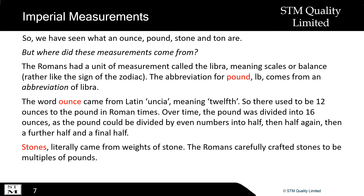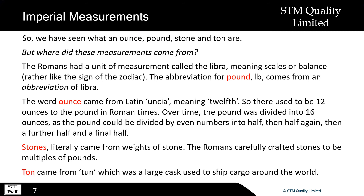Stones literally came from weights of stone. The Romans carefully crafted stones to be multiples of pounds. Tonne came from tunne, which was a large cask used to ship cargo around the world.